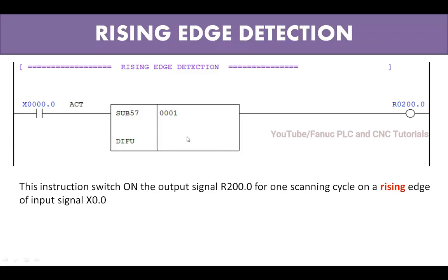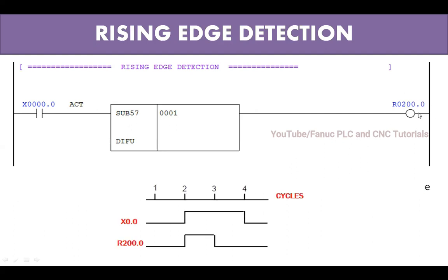This instruction will switch on the output address R200.0 when the input is on, but not continuously — only for one scanning cycle. Whenever this input is on, the output is on for only one scanning cycle. See here: X0.0 is 0, it is off.